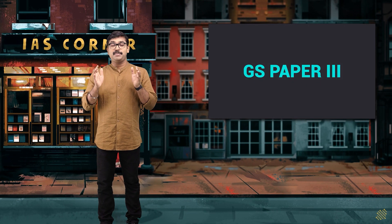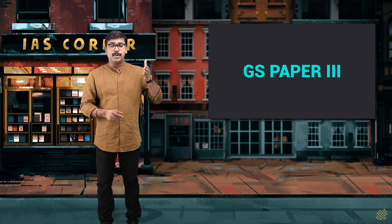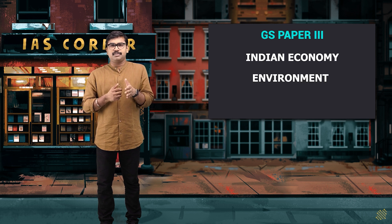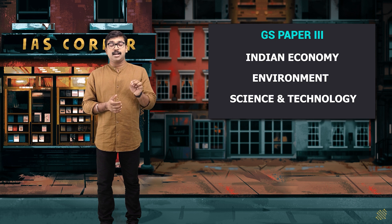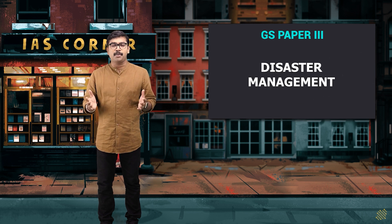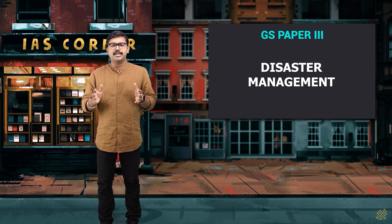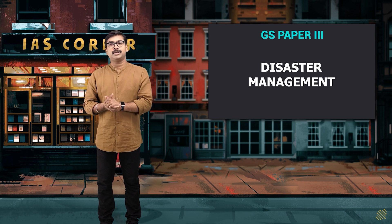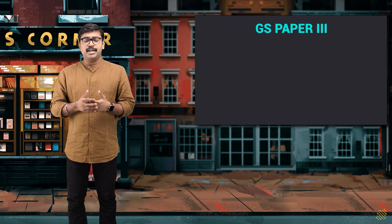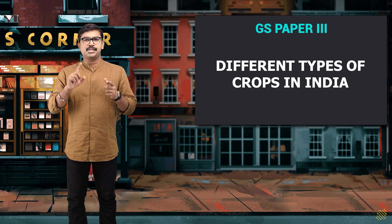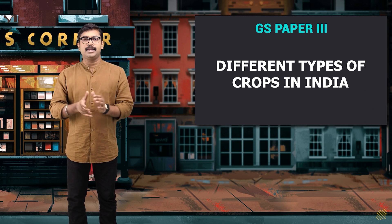Now let's discuss GS Paper 3. When I say GS Paper 3, economy, Indian economy, environment, biodiversity conservation, climate change, and science and technology come to mind. But there are underlying micro topics — take disaster management, for example. It's a huge topic. In GS Paper 1 there is geophysical phenomena including floods, earthquakes, and cyclones, but here in GS Paper 3 we talk about disaster management areas. Another important topic is the different types of crops in India, the cropping pattern, and different types of irrigation systems.